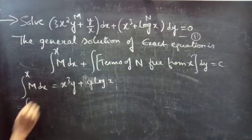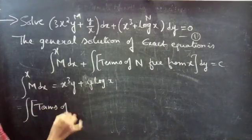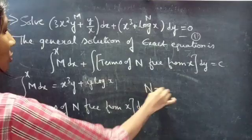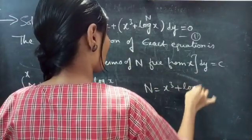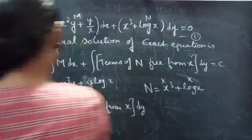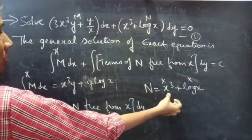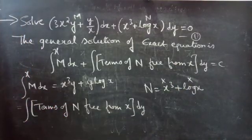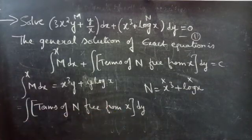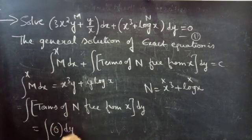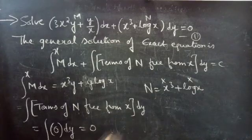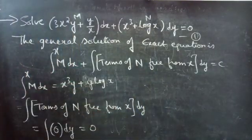Now let's consider the second integral — the integral of terms of N free from x dy. We have N equals x³ + log x. We don't have any term which is free from x, since both the first and second terms contain x. Therefore, the terms of N free from x is 0, so this integral equals ∫0 dy = 0.